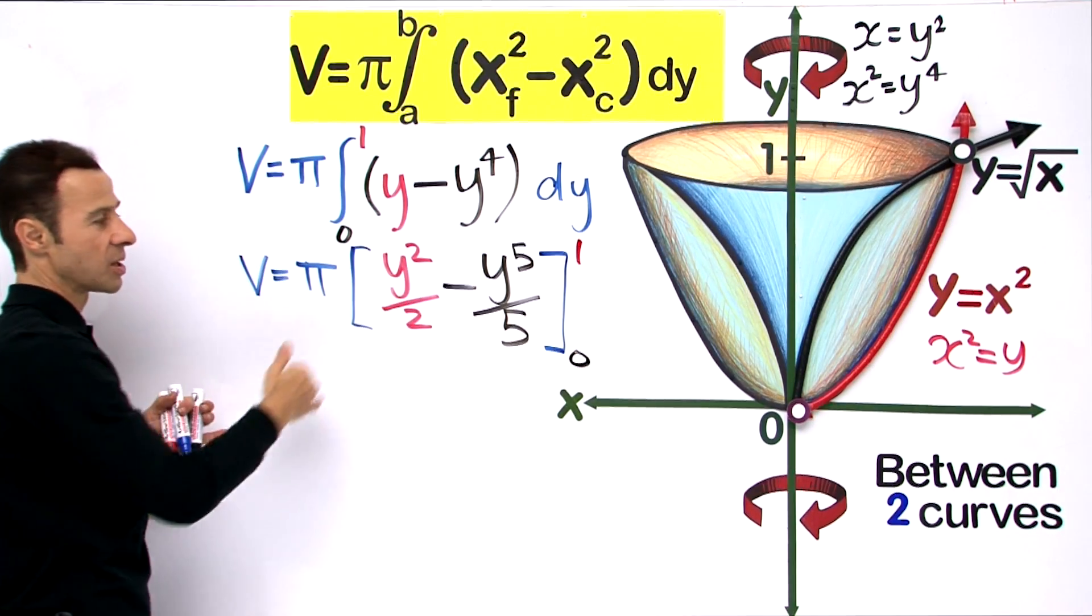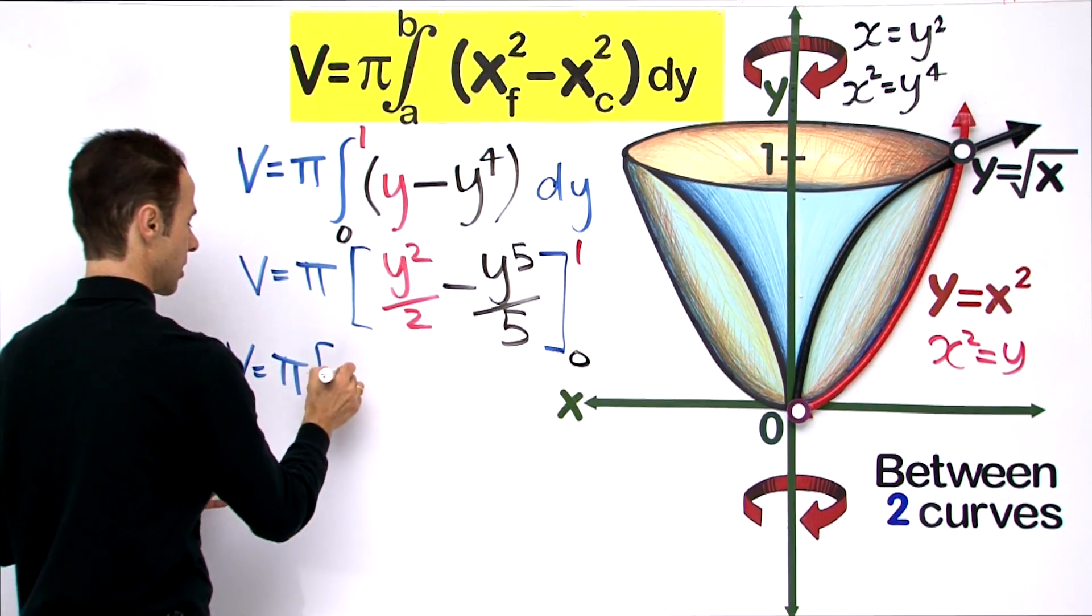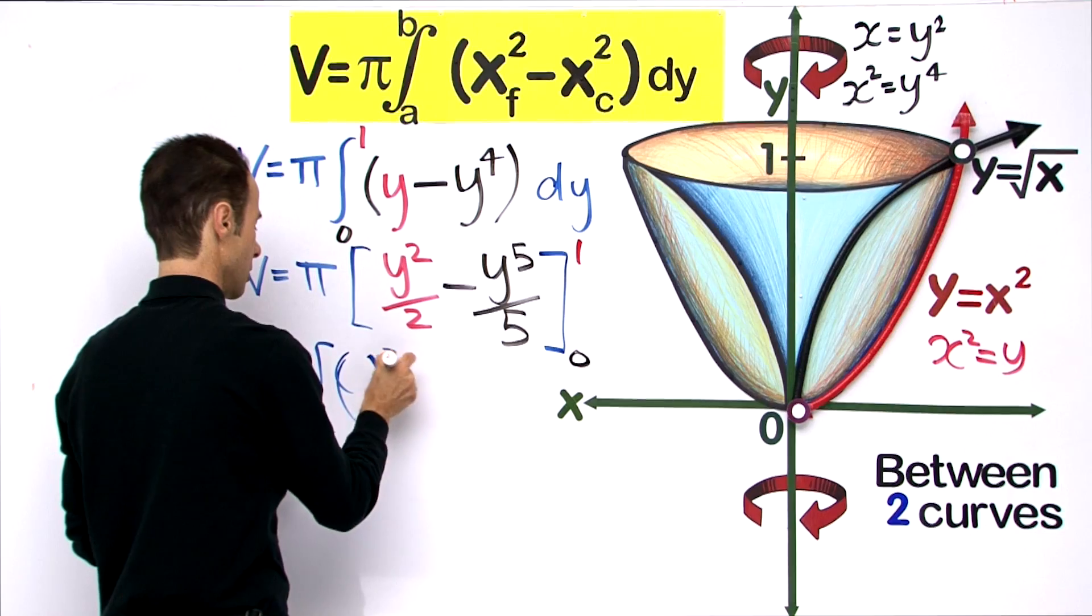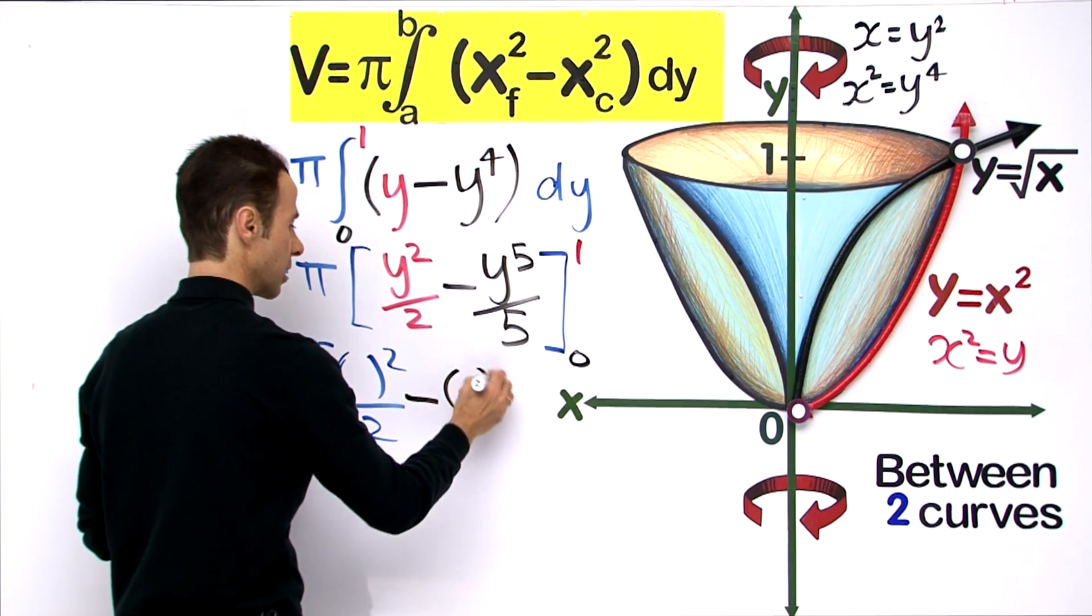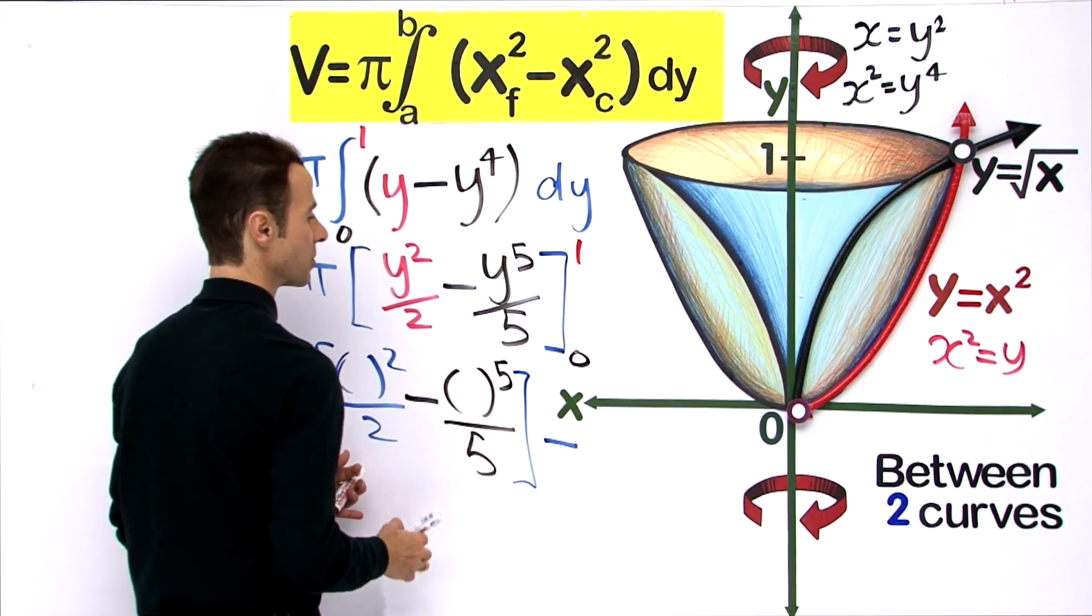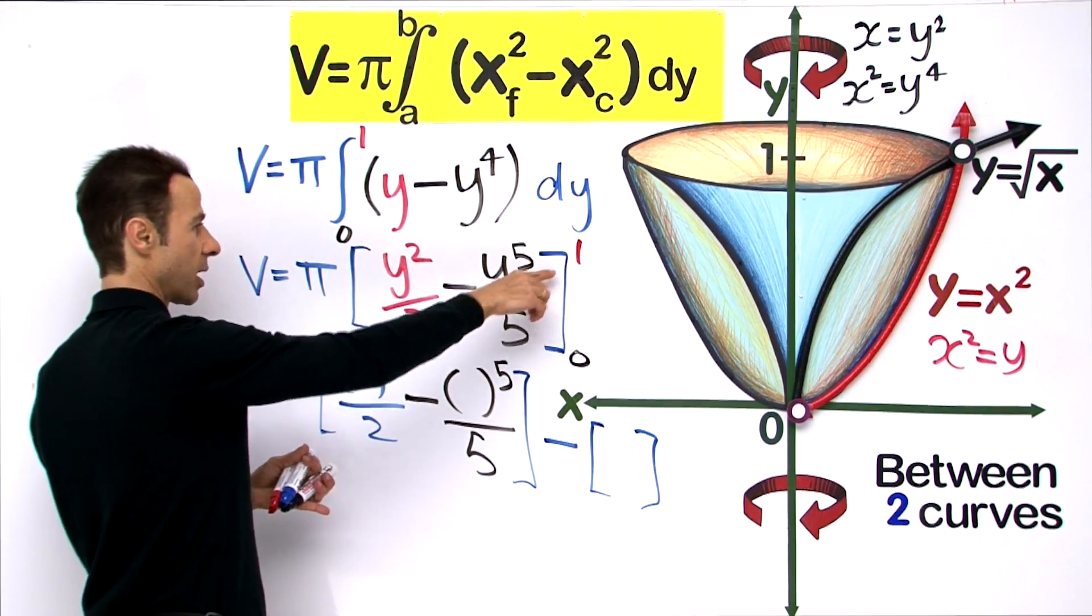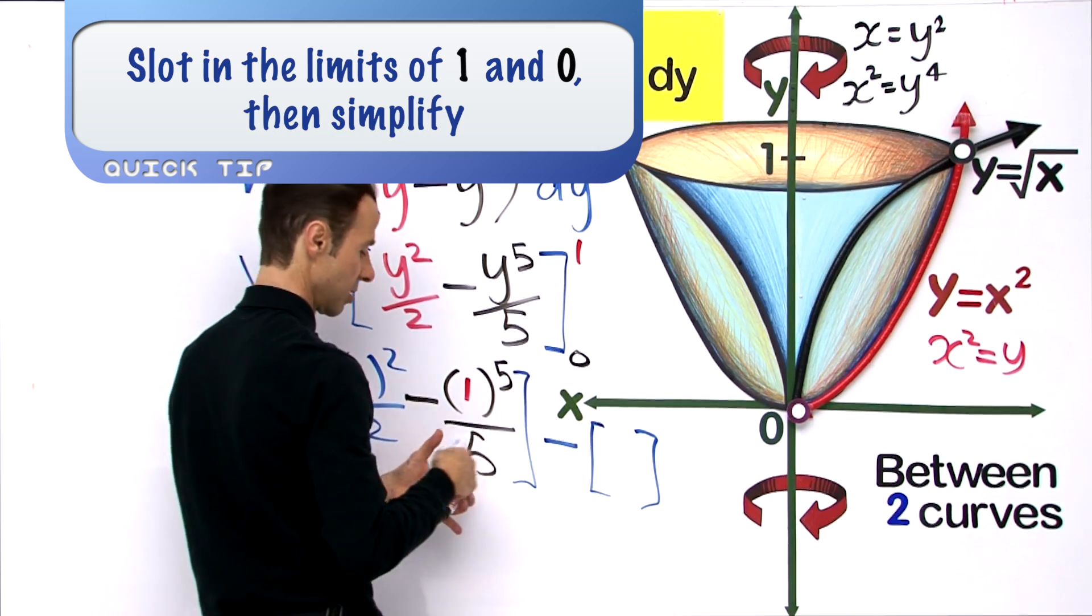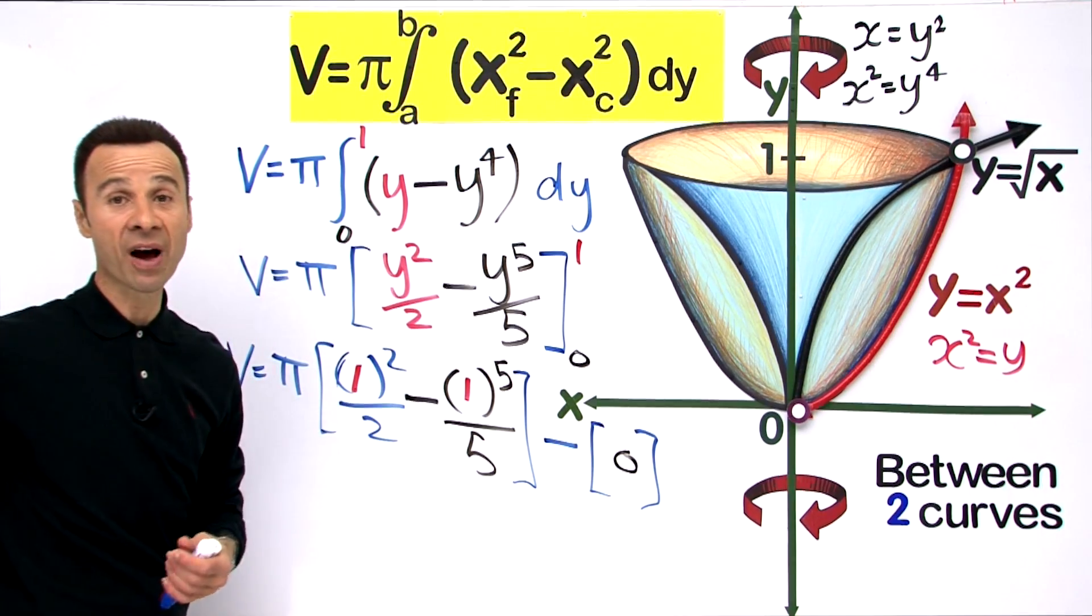Let us substitute: v equals pi times 1 squared over 2 minus 1 to the power of 5 over 5, and then subtract when we put 0 in. That is going to be 0 minus 0 - both 0 squared and 0 to the power of 5 are all 0.